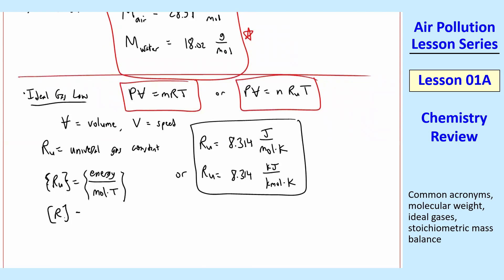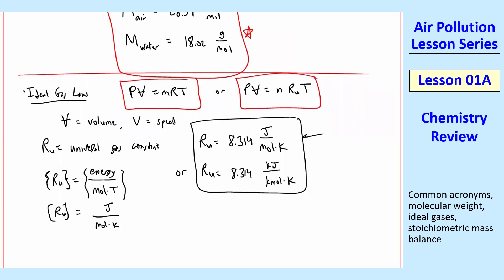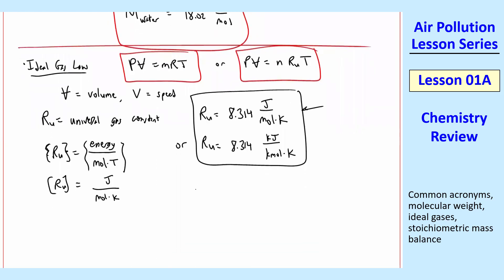The dimensions of this universal gas constant, these are squiggly lines, is energy per mole per temperature. And the units of Ru, energy is joule per mole k, as you see here. So that's the universal gas constant.